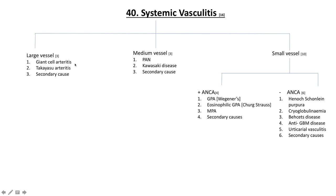For large vessel vasculitis, we have giant cell arteritis, which predominantly affects older folks and is also called temporal arteritis. Then there's Takayasu arteritis, which classically affects younger females and causes what we term 'pulseless disease.' There are also a whole host of secondary causes for large vessel vasculitis.